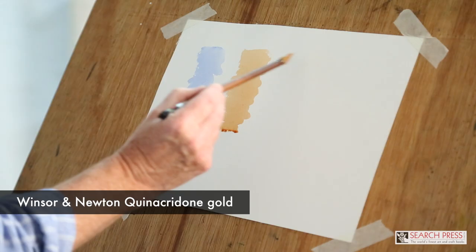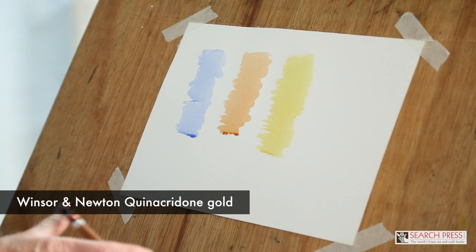And the third color is Quinacridone Gold. It's a very long name, I know, but it's a lovely golden yellow. We need a little bit of warmth in snow scenes. If we don't have warmth, the coolness tends to put the viewer off, so a little bit of warmth is always essential.